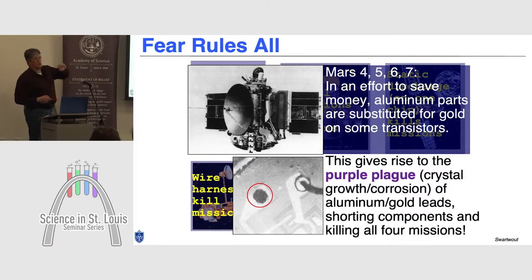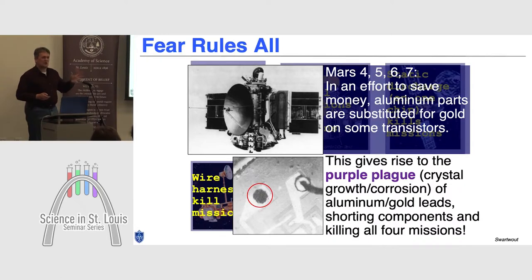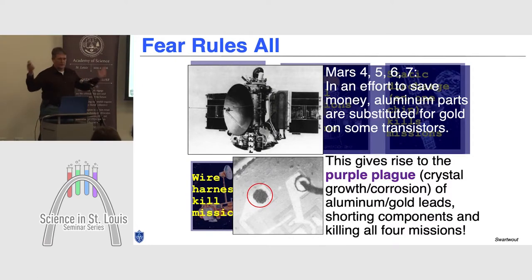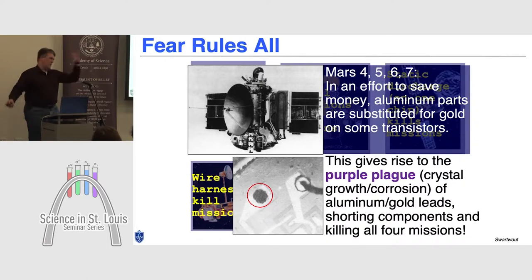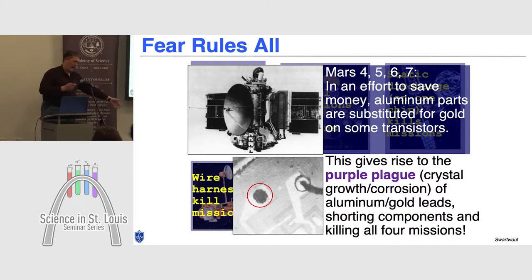The poor engineer who discovered this figured it out right before launch. They calculated it was going to take roughly nine months for these crystal growths to cause a short — and the time to fly from Earth to Mars is nine months. If they didn't launch, they'd have to wait two years and the Americans would get there first. So they had this decision: do we roll the dice? If we're slightly lucky, we'll get there, do the mission, and then they'll die. If we're unlucky, they'll die on the way. They said, might as well give it a shot. And they died on the way. A material mismatch: you put gold and aluminum together, and suddenly you have a problem you weren't expecting.